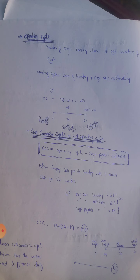Now, this operating cycle and cash conversion cycle can be calculated from those previous measures — the average receivable turnover, inventory turnover, and payable turnover. From these three methods we can easily calculate the operating cycle and cash conversion cycle of a company. First of all, let us understand what is the operating cycle and what is the cash conversion cycle or net operating cycle.